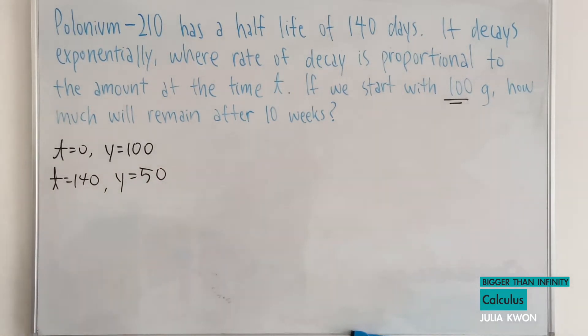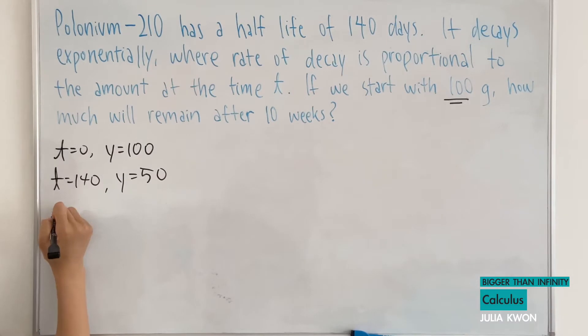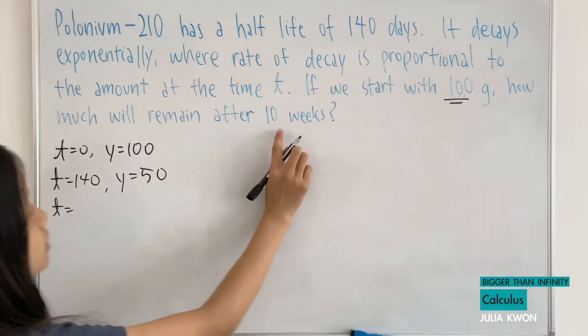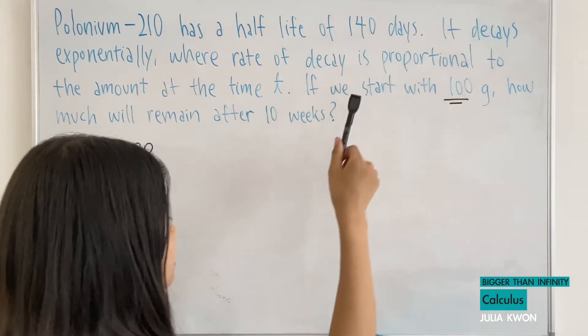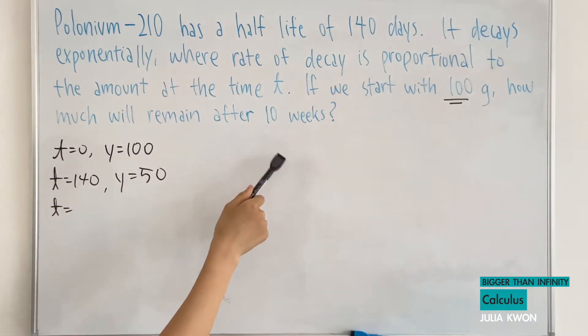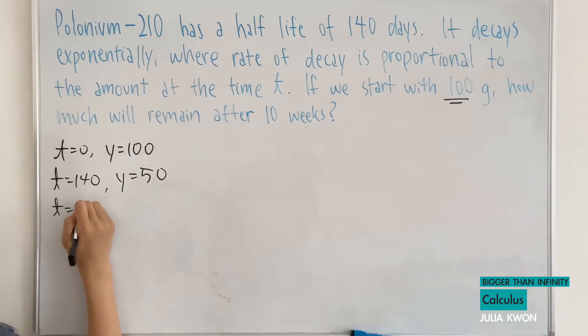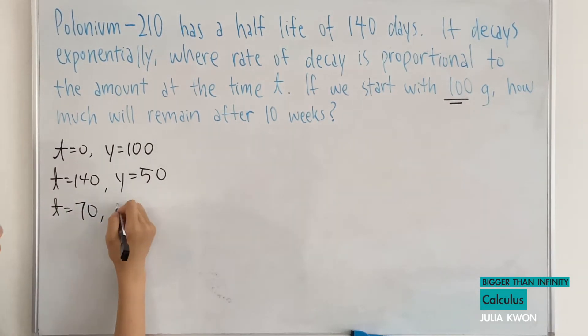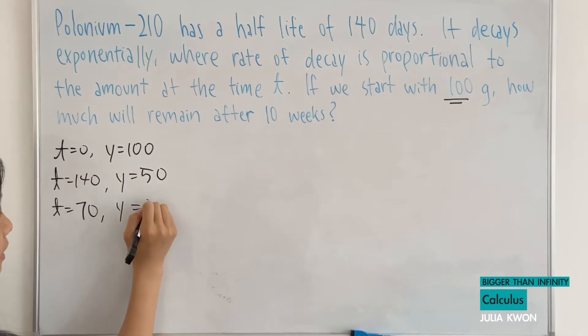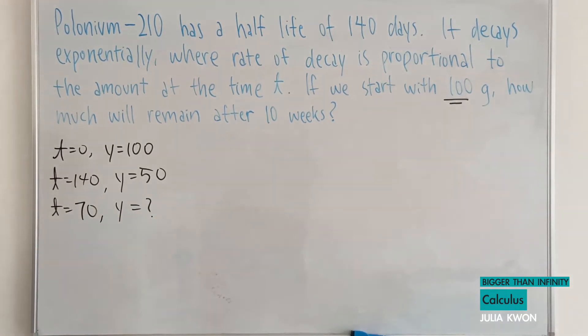And finally, we're going to write what we're trying to find. When t is equal to, since this is 10 weeks and we are solving everything in terms of days, we're going to change this into days, which would be 10 times 7 to 70. So when t is equal to 70, what is y? How many grams?